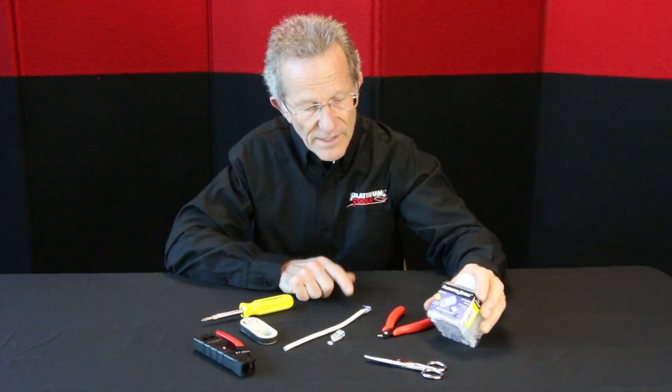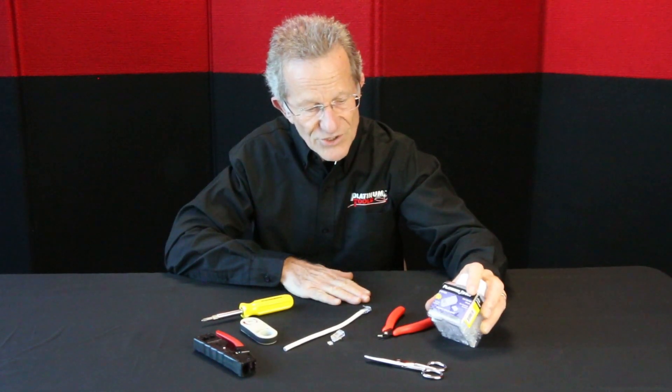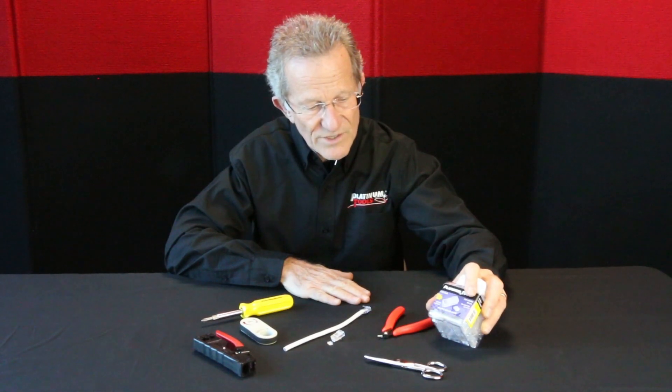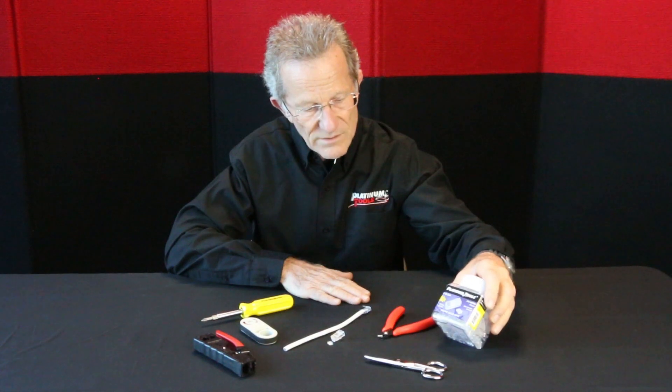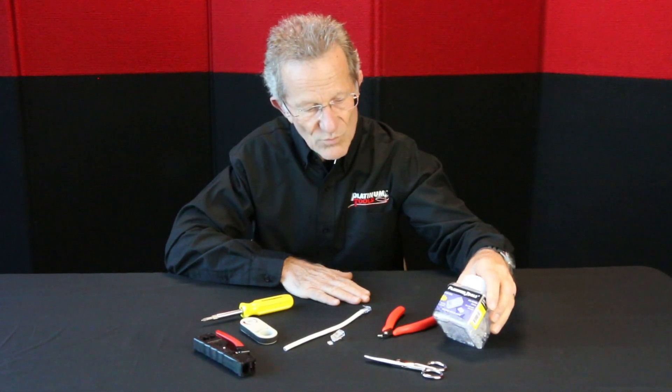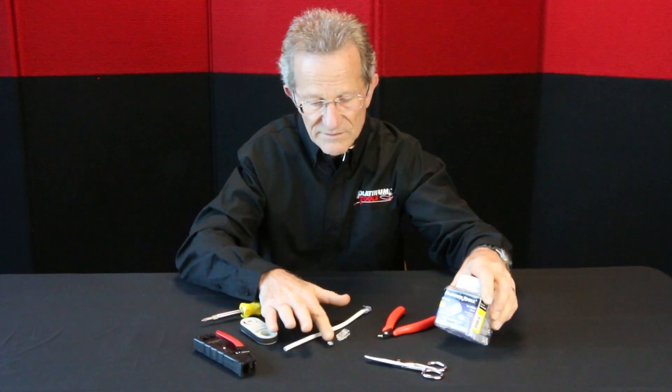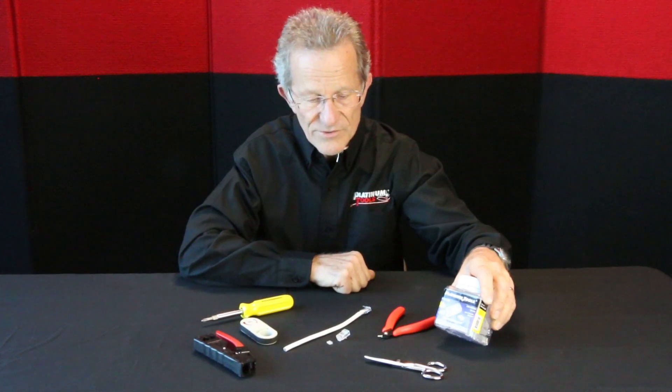We're going to talk about the part number on the jar is a 106188J. And it's a three-prong contact for solid wire, two-piece. And we're going to see how we do this.